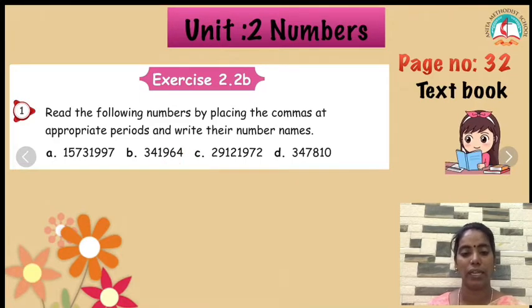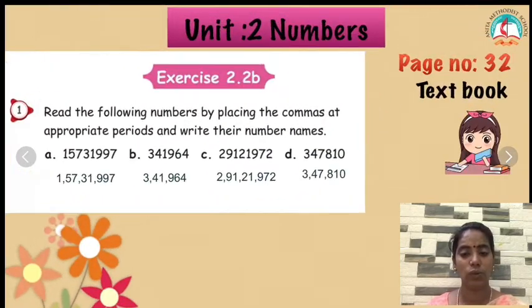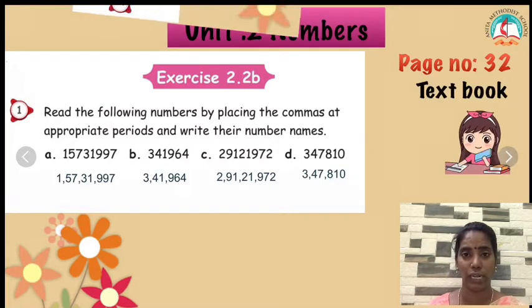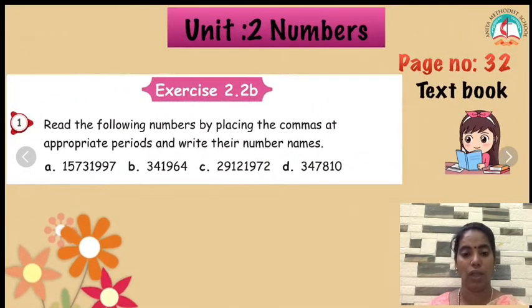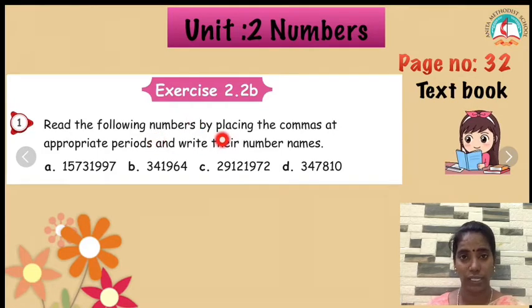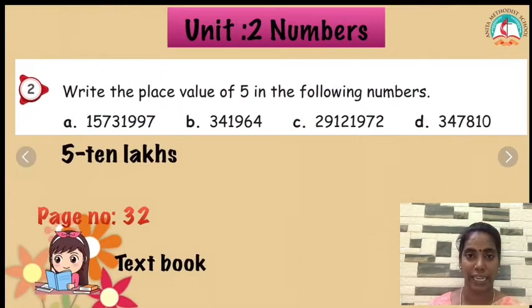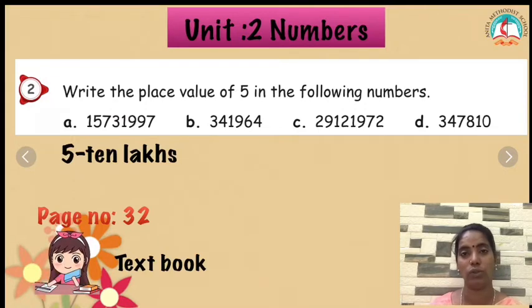Look at the answers and check. The next one: you have to write the number names. Children, this is for you — you have to write in your classwork the number names. The next one: we are going to write what is the place value of 5 in the given question. Where is the 5? In question A, the 5 is in the 10 lakh place value. So the answer is 5 ten-lakhs.